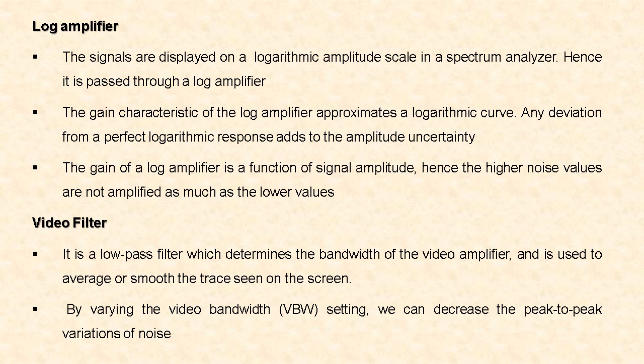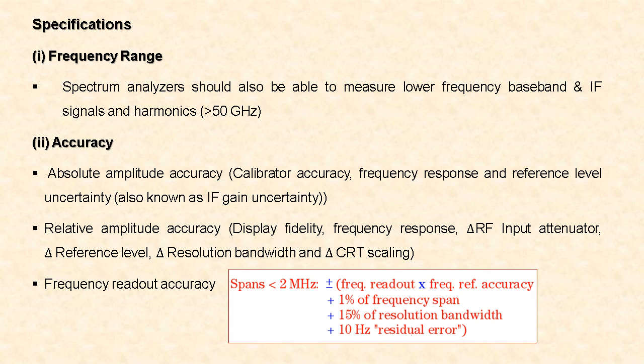Next is the video filter, which is a low-pass filter that determines the bandwidth of the video amplifier. It is used to smooth the trace seen on the screen. By varying the video bandwidth setting, we can decrease the peak-to-peak variations of noise.